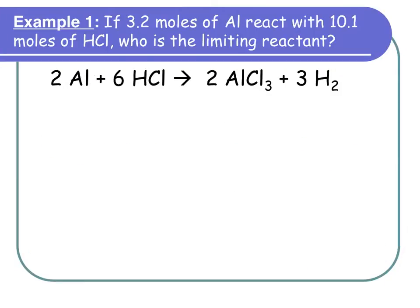Example 1: we have 3.2 moles of aluminum reacting with 10.1 moles of hydrochloric acid. Who is limiting? This is Part A. While we do Part A, I always read Parts B and C ahead to see where I'm going.